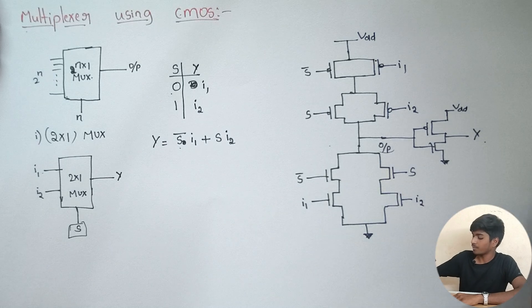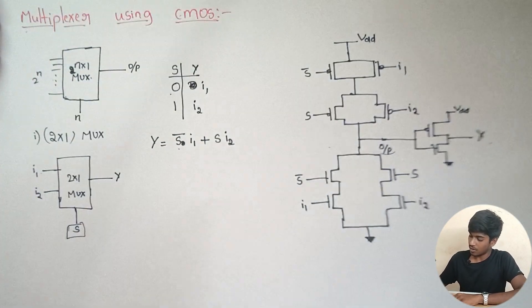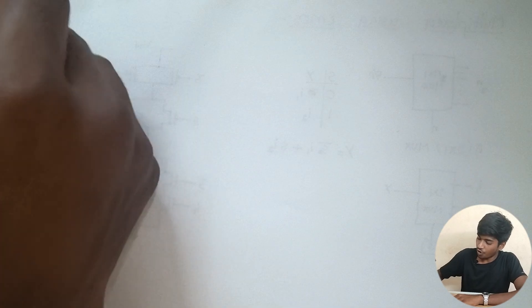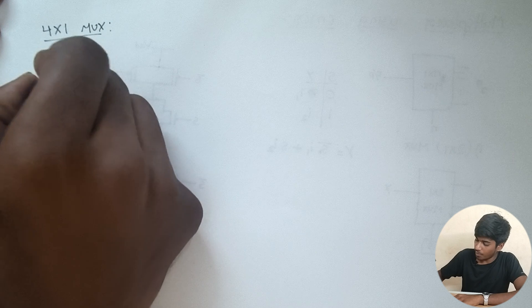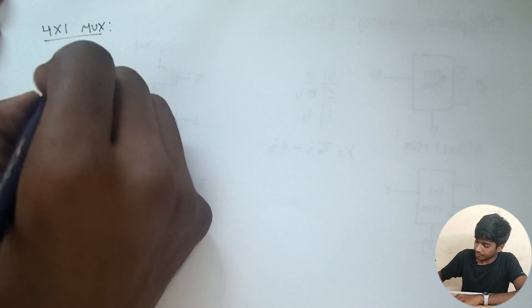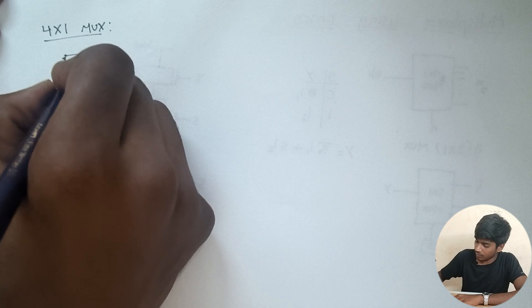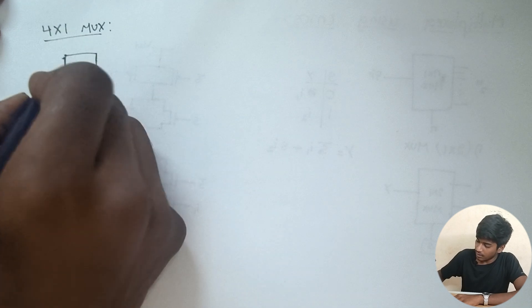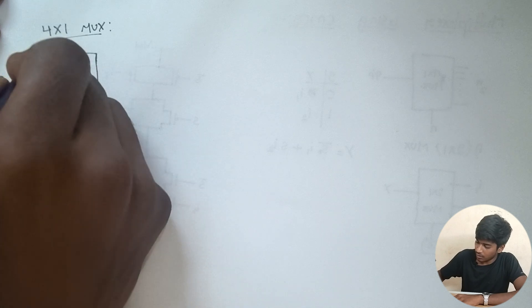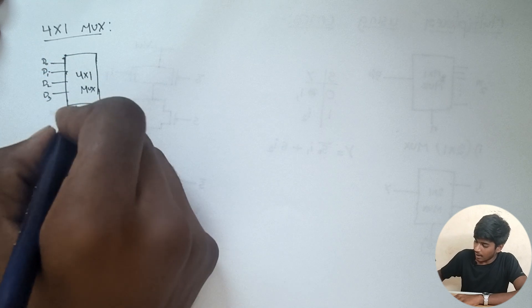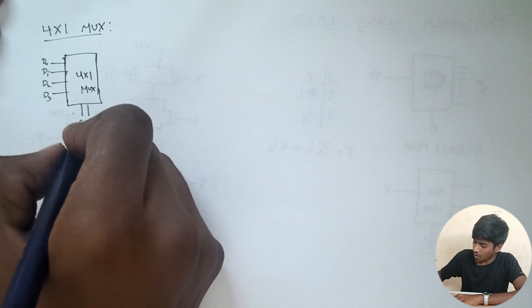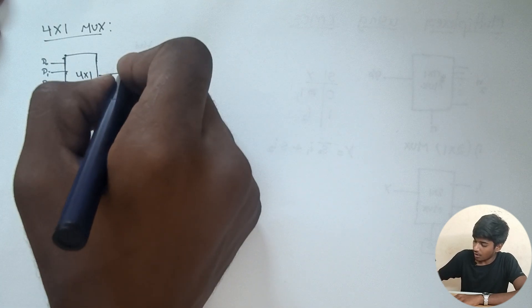We should remember that the output will be complement. To get the original circuit, we need to connect an inverter again, and this will be the final output y. Now let us look at how a 4 by 1 multiplexer is implemented. For a 4 by 1 multiplexer, there are 4 inputs D0, D1, D2, D3 and 2 select lines S1 and S0, with output y.